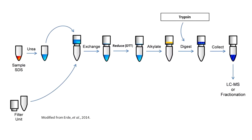FASP allows us to solubilize whole or fractionated protein samples, digest the proteins with trypsin, and analyze the resulting peptides by mass spectrometry. Some of the important reagents we will be using in this assay are urea, DTT, IAA, also known as iodoacetic acid, and trypsin.